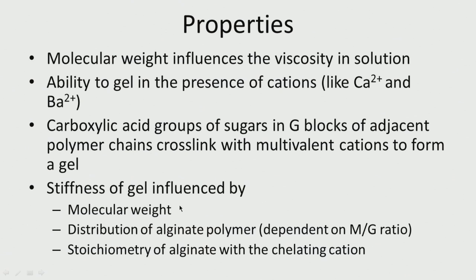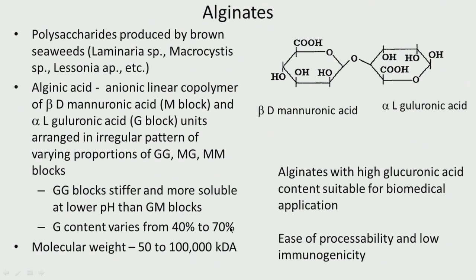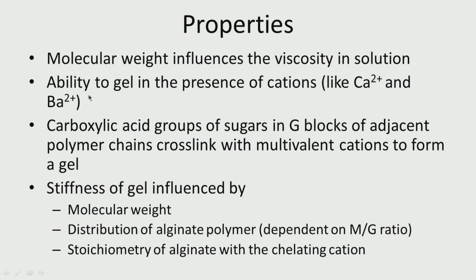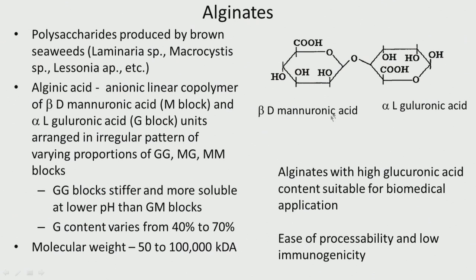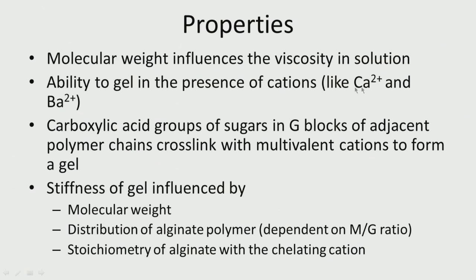Molecular weight influences viscosity in solution — the higher the molecular weight, the more viscous it becomes. Alginates can gel in the presence of cations like calcium2+ and barium2+, because the COO- groups can take in different cations. The carboxylic acid groups of sugars in the G block of adjacent polymer chains cross-link with these cations and form the gel. The stiffness of the gel depends on the molecular weight, distribution of alginate polymer, the M-to-G ratio, and the stoichiometry of alginate with the chelating cation.